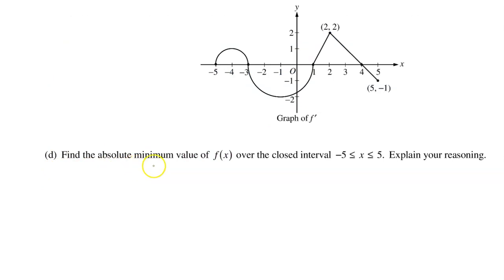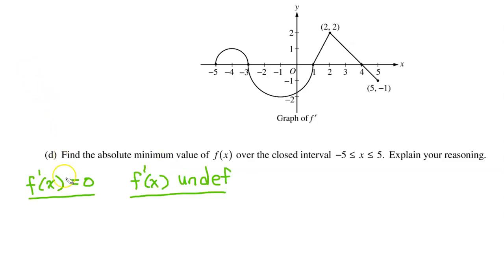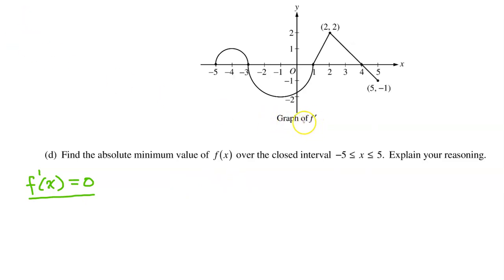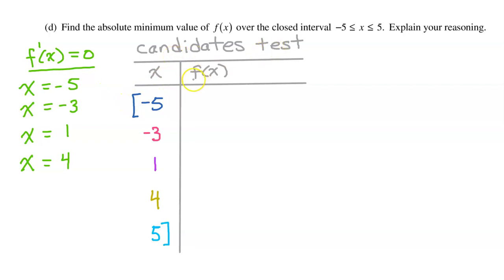Part D: find the absolute minimum value of f of x over the closed interval from negative 5 to positive 5. Explain your reasoning. When asked to find an absolute maximum or minimum, you will almost always make a candidates test. The first step is to find the critical values where f prime equals 0 or is undefined. Looking at the graph of f prime, we see that it is continuous everywhere, so there is nowhere f prime is undefined. Since they gave us the graph of f prime, it is easy to see where f prime equals 0. Now we can set up the candidates test, which is a t-chart of f of x where the x values include the critical points and the endpoints of the interval.